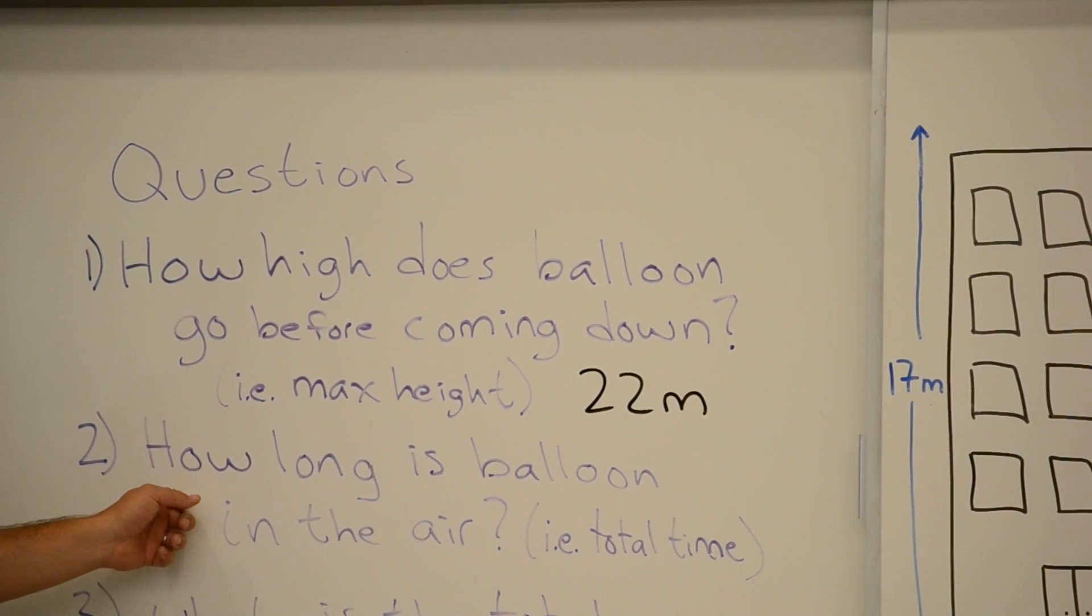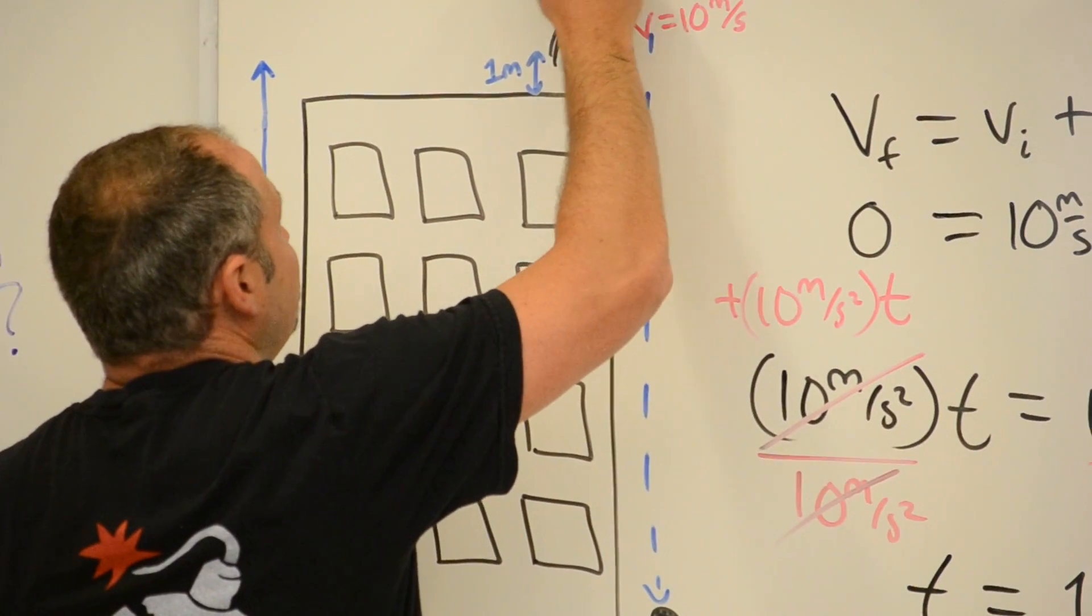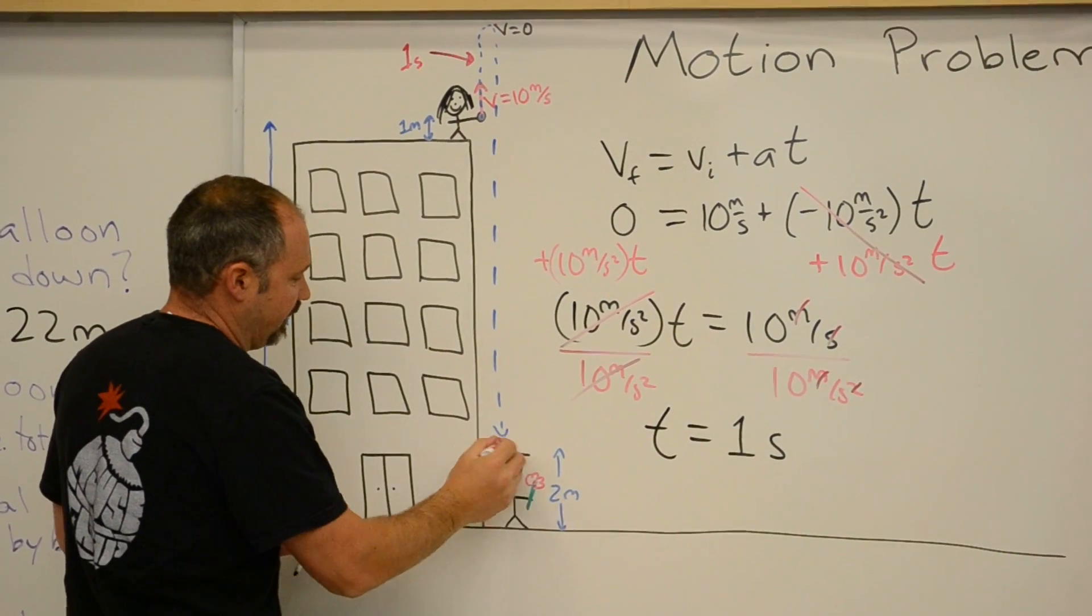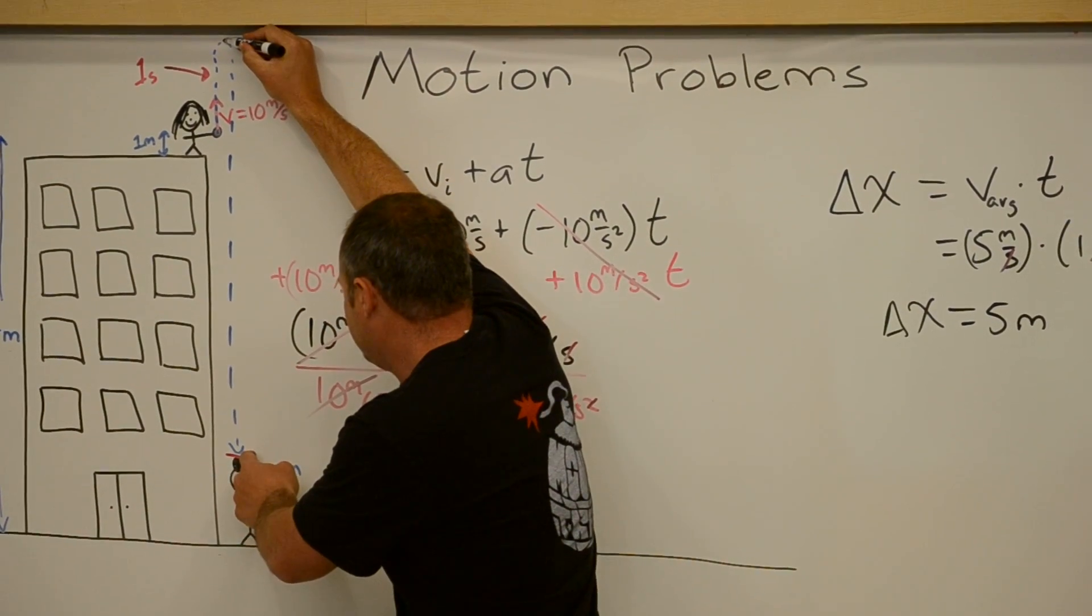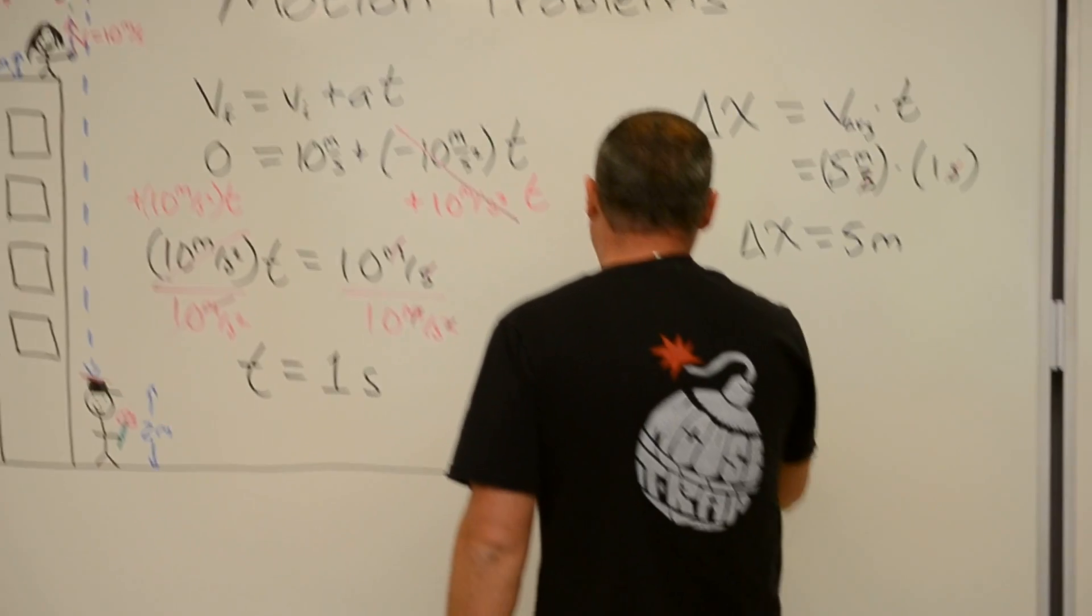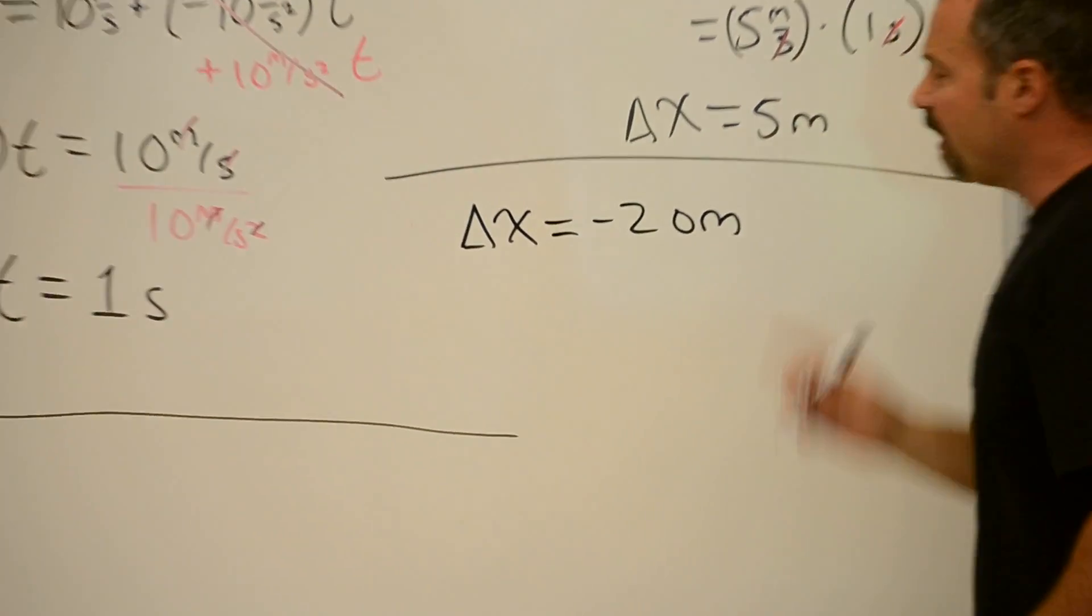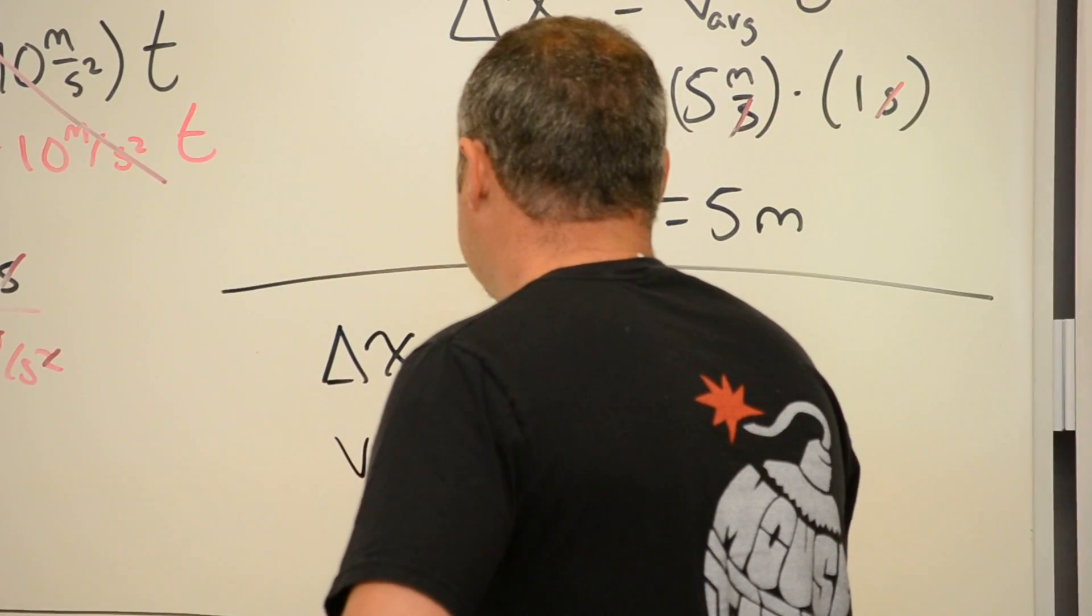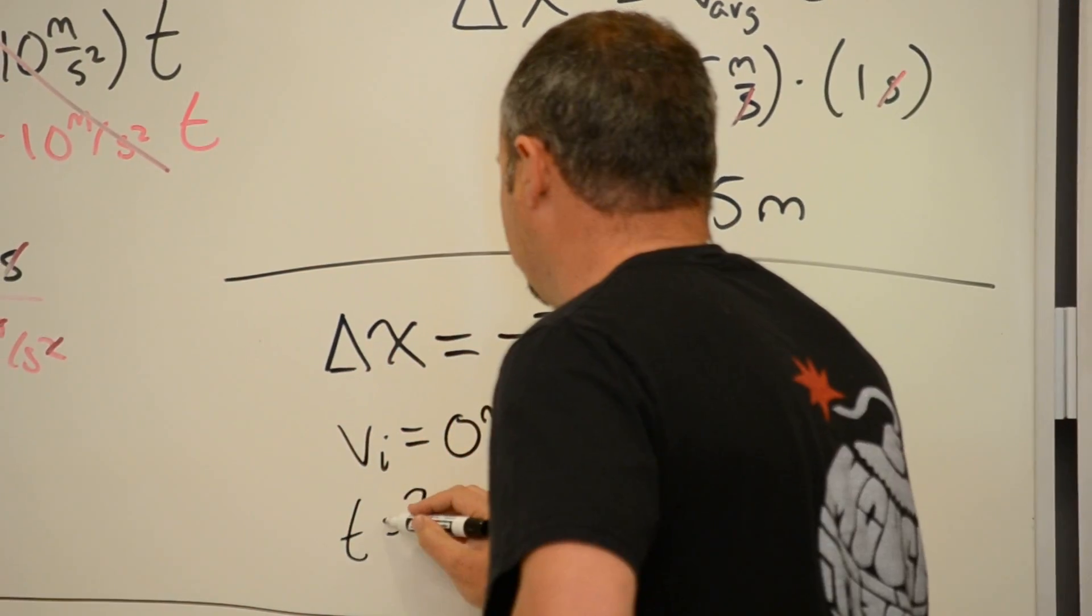Now let's ask the question, how long is the balloon in the air? Well, we know that this part of the journey here took one second. How long will this part of the journey take until it hits him in the head? Well, what is that distance? Well, this right here is 22 meters. His head stands two meters above the ground, so that's a difference of 20 meters. So the balloon has to travel a distance of negative 20 meters. And we also know that at the top, its velocity is zero. So the initial velocity is equal to zero. So that's what we know. And what we want to find is the time of this journey downward.